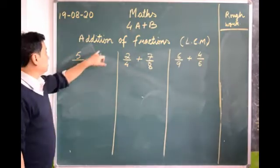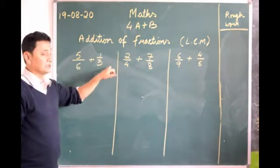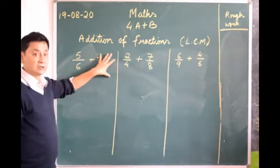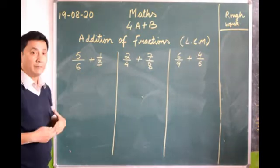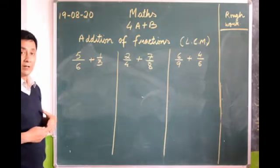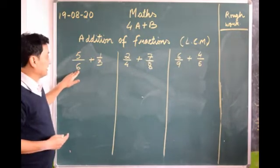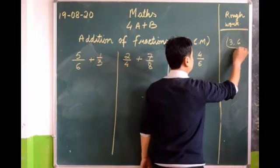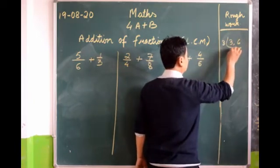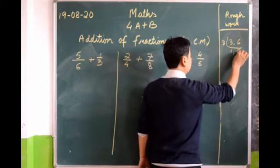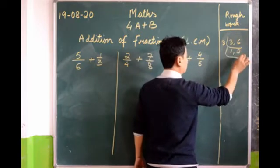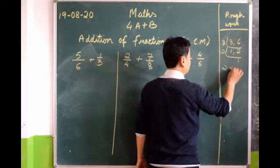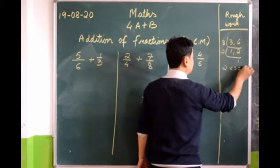To find that common number we have to find the LCM of 6 and 3. Put the smaller number first: 3 and 6. 3 goes into 3 once; 3 goes into 6 twice. So the LCM of 3 and 6 equals 2 threes are 6. After finding the LCM, draw a line and write 6 in the middle. 6 goes into 6 one time — 6 ones are 6. 3 goes into 6 two times — 3 twos are 6.